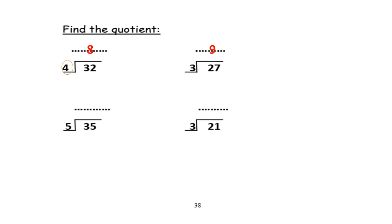35 divided by 5. I will sing the song of table 5 — what is the number outside? This is 5. Close your hands. Sing the song of table 5. The number of fingers will be the answer, and I will write it up. 5, 10, 15, 20, 25, 30, 35 — so the answer will be 7. You are now open 7 fingers.